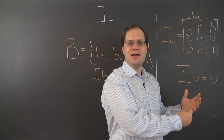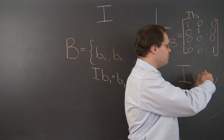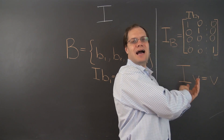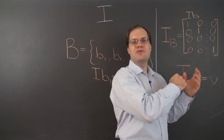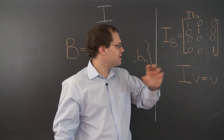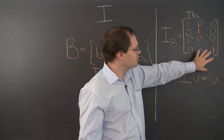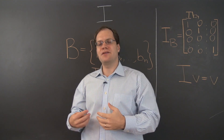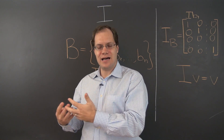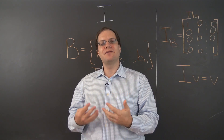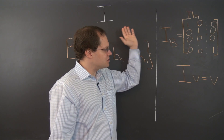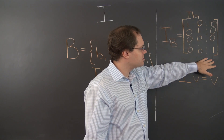So in component space, whatever the input set of components is, that's the output set of components. Bringing that back to the real world, whatever linear transformation this matrix represents must have the property that whatever is the input vector, that's the output vector as well — every vector is left unchanged. So the identity transformation is represented by this matrix.